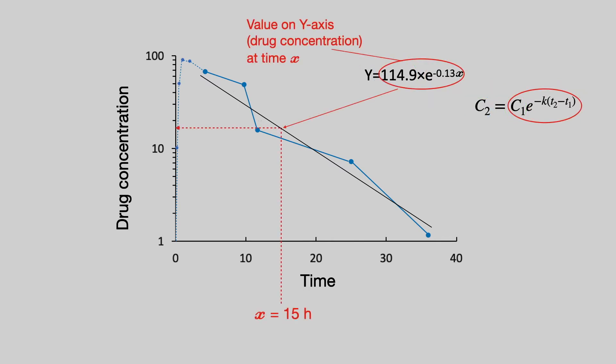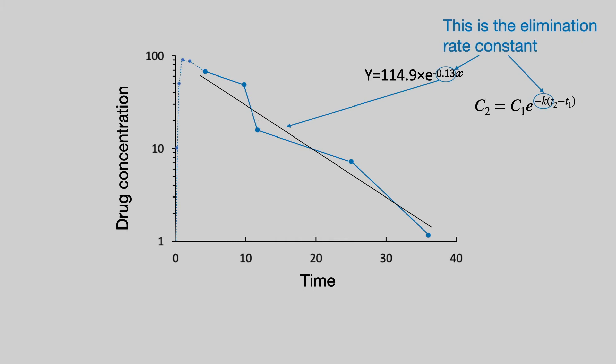You can calculate a drug concentration from the y-axis for any given time point on the x-axis. So, let's say x equals 15 hours. Feed x equals 15 into the equation, and you will find y will give you a drug concentration of 16.35 nanograms per ml. The other really important point about this equation is that that exponent of e is the same as the elimination rate constant.